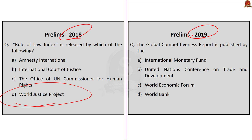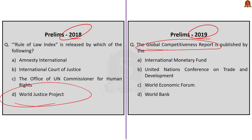Now the 2019 question: The Global Competitiveness Report is published by — Option A: International Monetary Fund, Option B: United Nations Conference on Trade and Development, Option C: World Economic Forum, Option D: World Bank. The correct answer is option C, World Economic Forum. The Global Competitiveness Report (GCR) is published by the World Economic Forum. It is a yearly publication, published since 2004, and it ranks countries based on the Global Competitiveness Index.